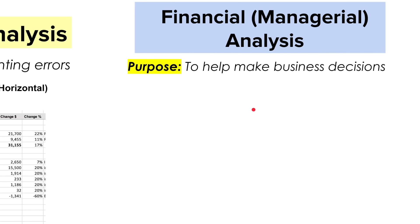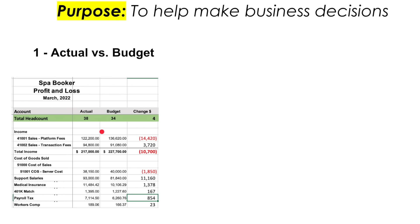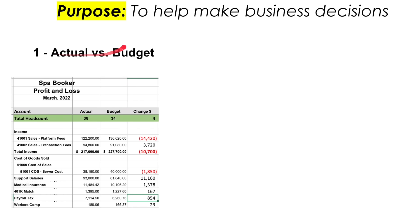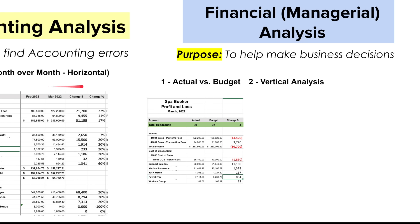The second category is financial or managerial analysis, which breaks down into three types — all aimed at helping make business decisions. These are more strategic in nature. The first is actual versus budget, where we compare actual results to the budget, look at the change, and determine what adjustments need to be made — for example, to spending — to run the company more efficiently.